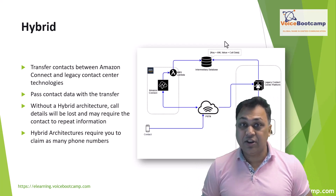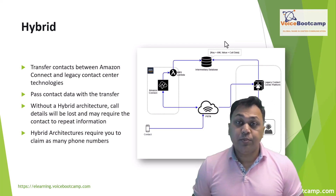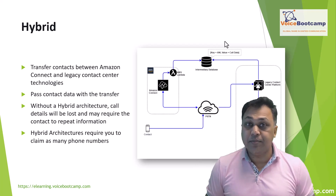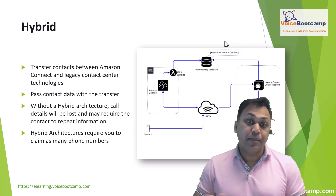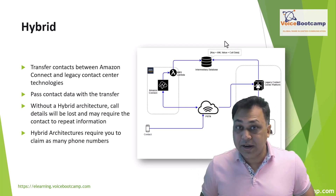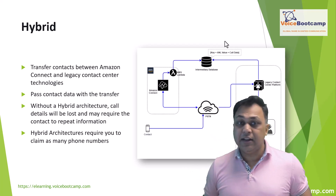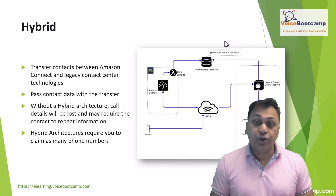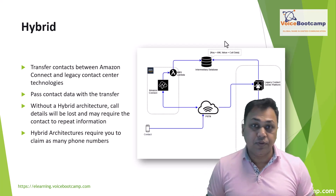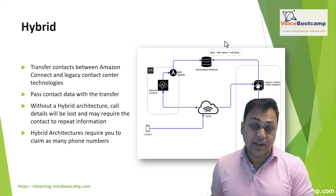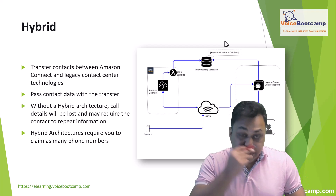If you have a requirement to transfer contacts between Amazon Connect and legacy contact center technologies, you can use the hybrid model. The hybrid model passes contact data along with the transfer. For example, a sales business unit on a legacy platform may need to transfer a call to a service business unit that has been migrated to Amazon Connect. Without a hybrid architecture, call details are lost and the contact may need to repeat all their information — such as account details or credit card information — increasing handle time and causing customer frustration.